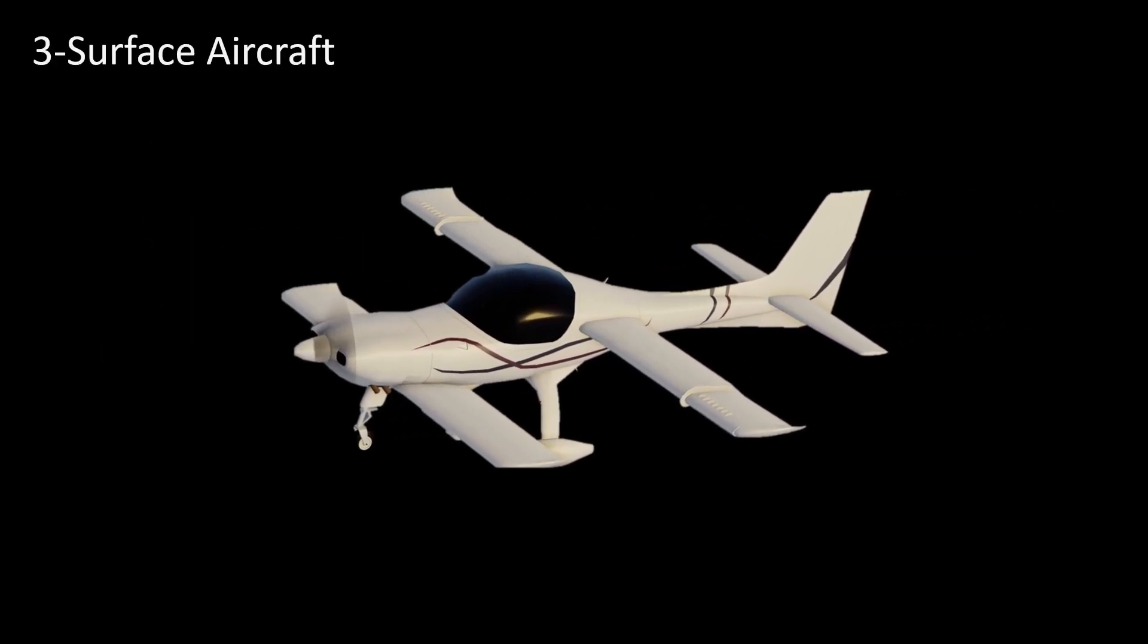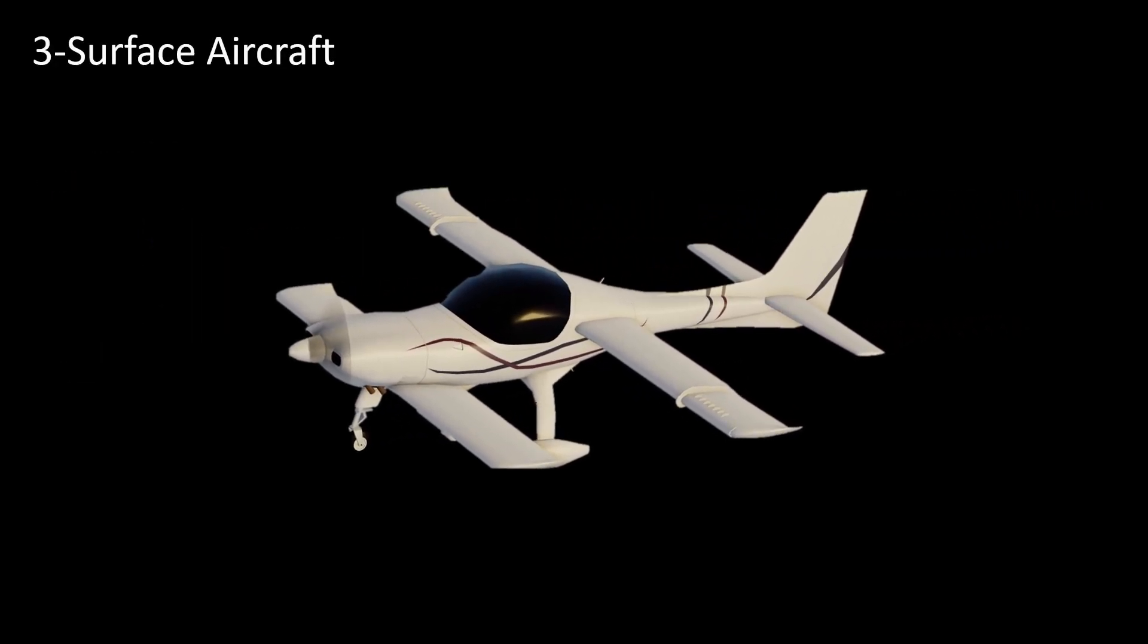Three-surface planes can be thought of as the combination of canard and conventional aircraft. It consists of the main wing, a foreplane or canard, and a horizontal tail.